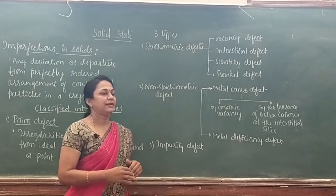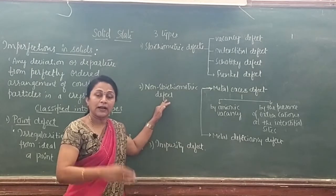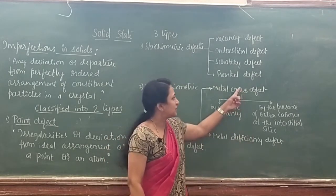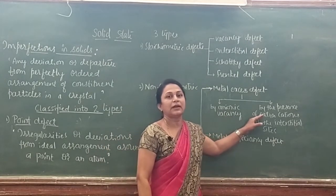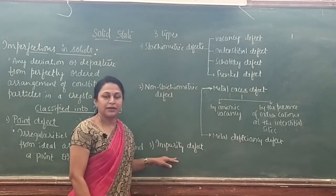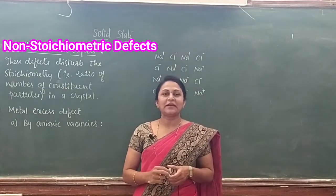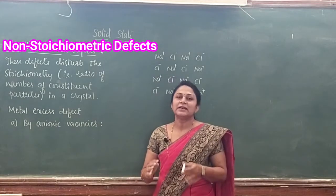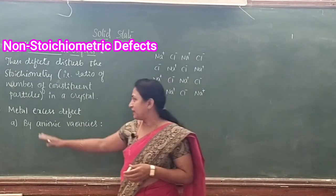Today in this session, we shall focus our study on non-stoichiometric defects and impurity defects. Non-stoichiometric defects disturb the stoichiometry — that is, the ratio of the number of constituent particles in the crystal. These are of two types: metal excess defects and metal deficiency defects.